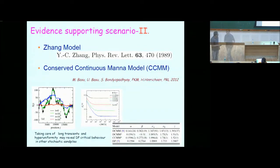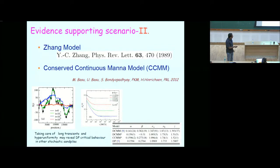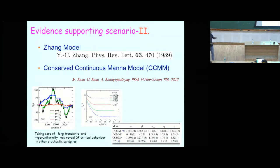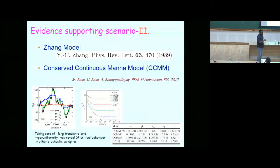The exponents are: beta describes how activity decays to zero at the critical point; nu describes how the correlation length diverges as you approach the critical point; the relaxation time exponent describes how time scale diverges; the dynamical exponent z gives how space and time scale together; and another exponent describes how activity decays at the critical point starting from a highly active state.